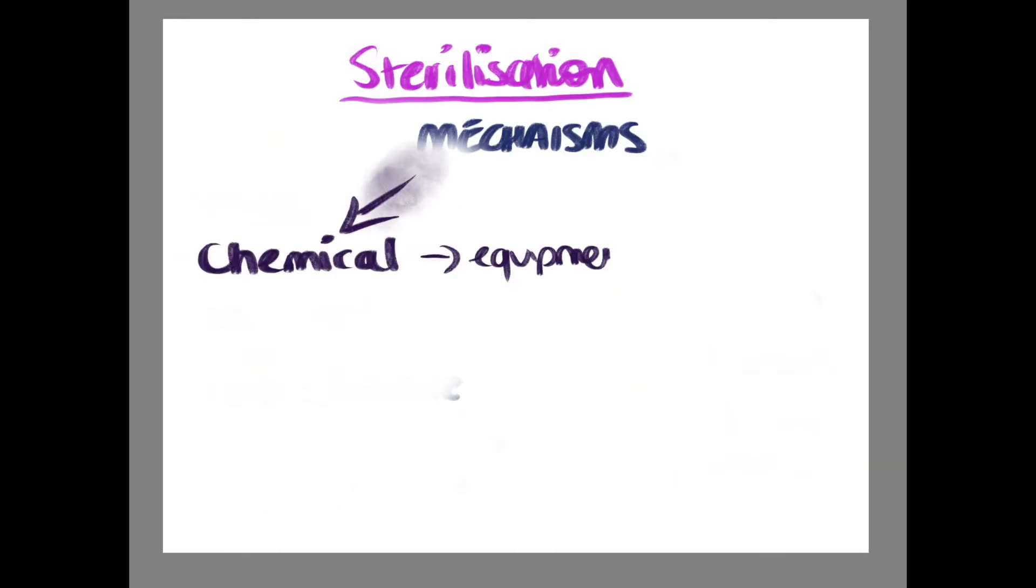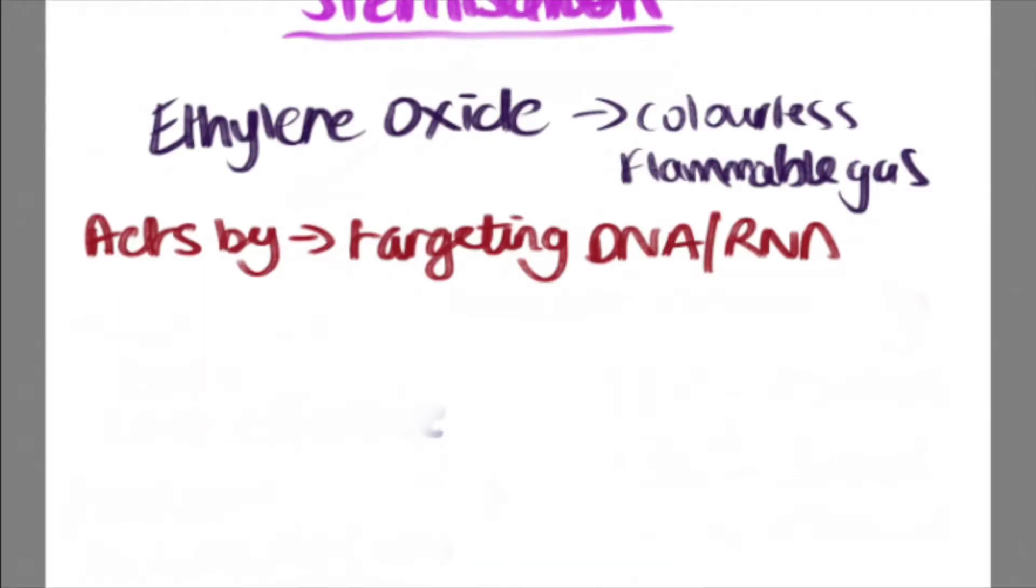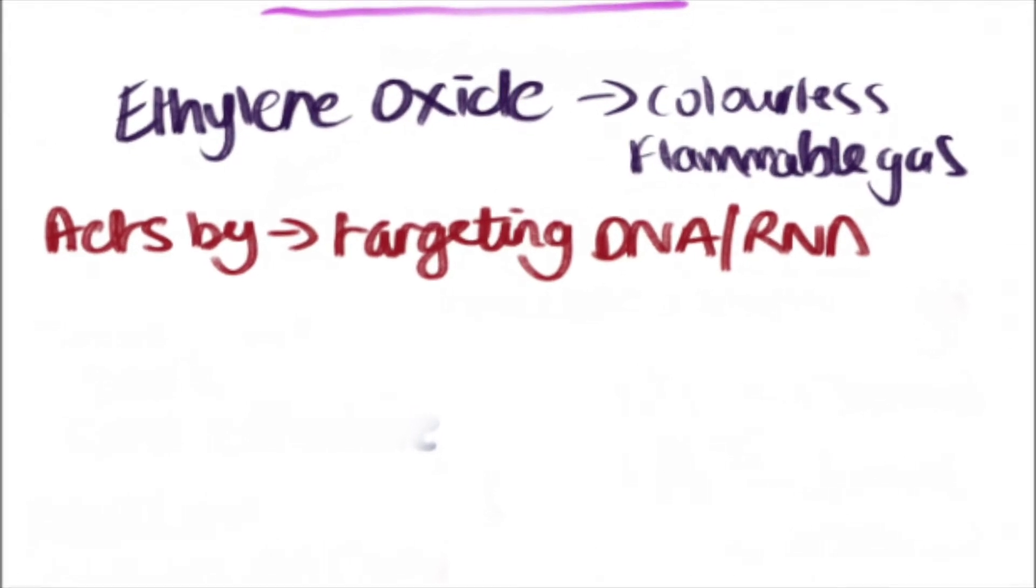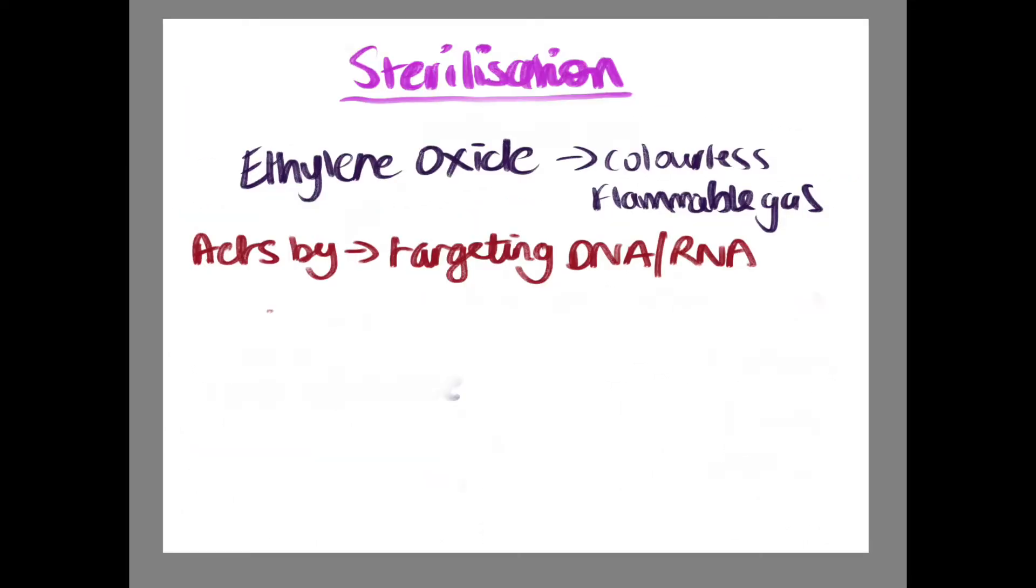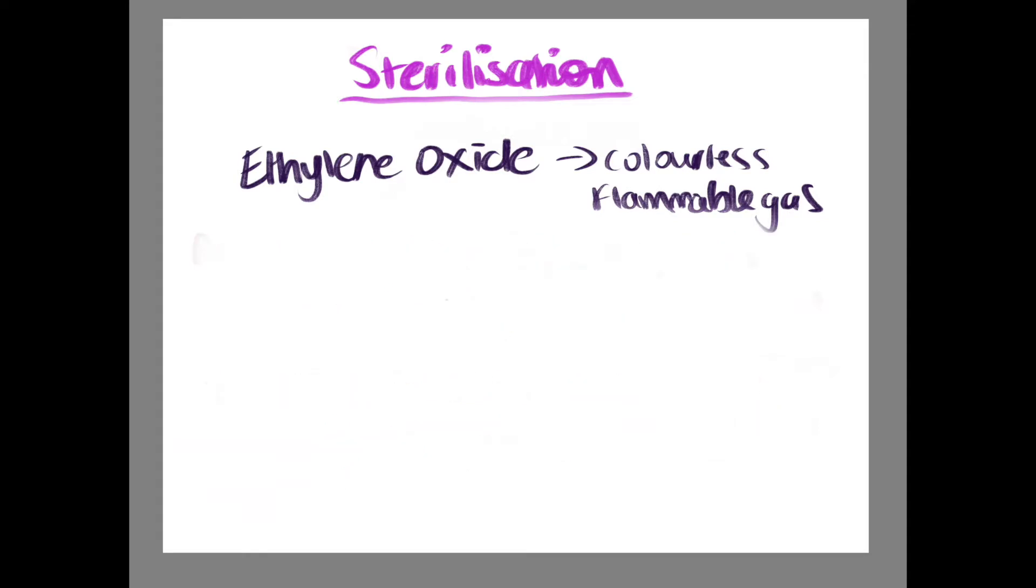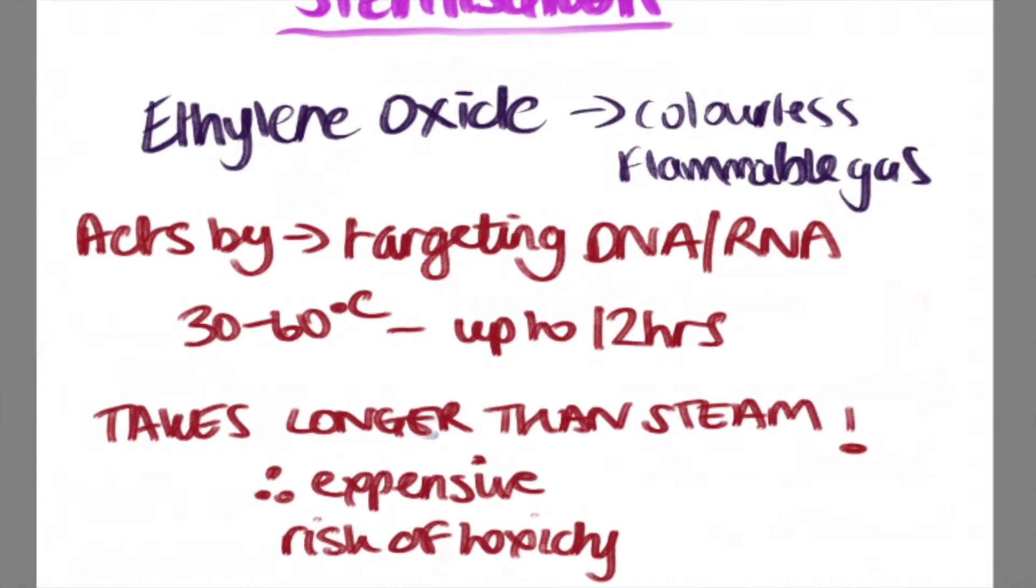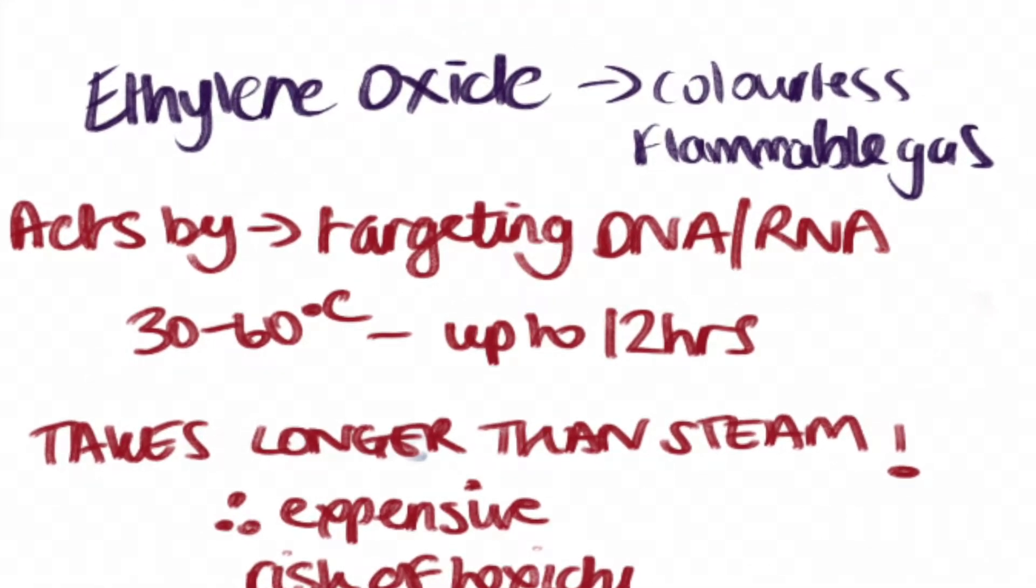Chemical sterilization: If the equipment cannot tolerate steam, then this is the next best thing. Ethylene oxide is a colorless and flammable gas which causes antimicrobial activity by targeting protein, DNA and RNA. Temperatures of around 30 to 60 degrees Celsius are used in cycles lasting up to about 12 hours. Despite not needing high temperatures, the duration of sterilization is longer than steam. There is a risk of toxicity and currently, respiratory equipment is not recommended to be sterilized via this process. It is a relatively expensive and resource intensive process.